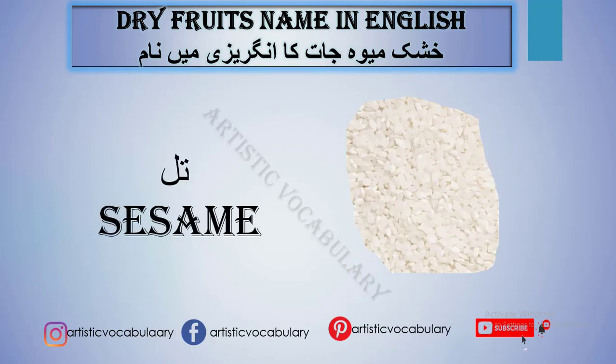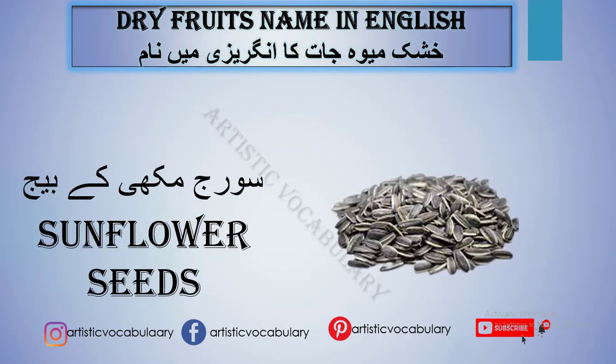Next word is Til, which is Sesame. Its oil is also made — it is called Sesame Oil and it is used in cooking and eating. In Urdu it is called Til and in English it is called Sesame. Next word is Suraj Mukhi ke Beej, meaning Sunflower Seeds. You can also see the picture.